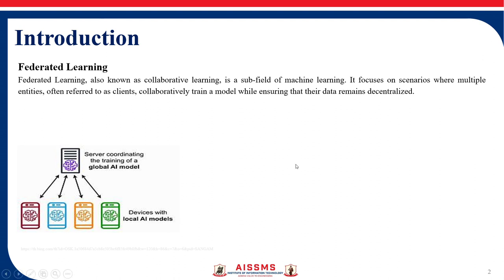In this diagram, you can see we have the server, which is coordinating the training of a global AI model, and we have devices with local AI models. These represent all the different friends at their homes with their smartphones, and the server is the one coordinating at the end.